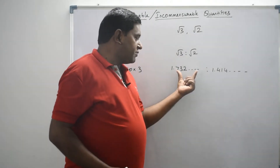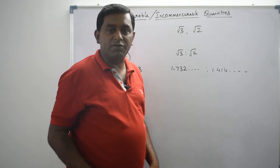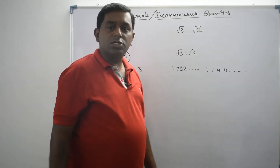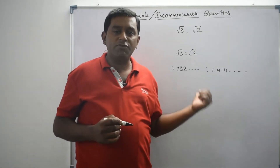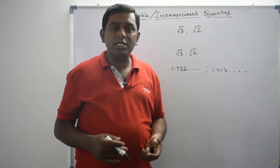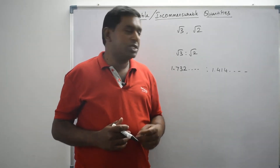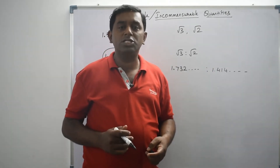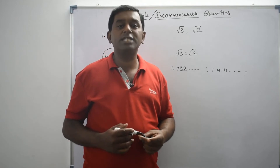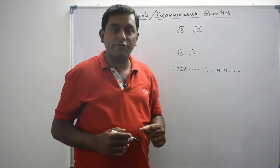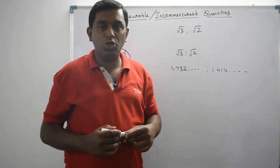In 1.732 — that is, in this irrational number — there are an infinite number of digits after the decimal. The same applies to square root of 2. Our aim is to make both terms integers, but to do that we need to know how many decimal digits there are so we can choose the right multiplier. Since both terms have an infinite number of decimal digits, we cannot determine the number by which to multiply. So these two quantities, square root of 3 and square root of 2, are incommensurable — they cannot be expressed as a ratio of integers.